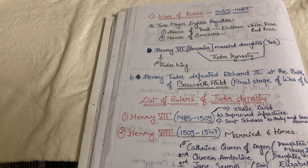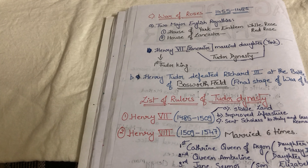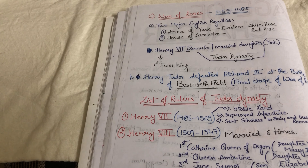Henry Tudor was from the House of Lancaster. He defeated Richard III, who was from the House of York, at the Battle of Bosworth Field. This was the final stage of the War of Roses, and finally the House of Lancaster won. Henry Tudor then married the daughter of the House of York, and the next king came from both the House of Lancaster and the House of York.